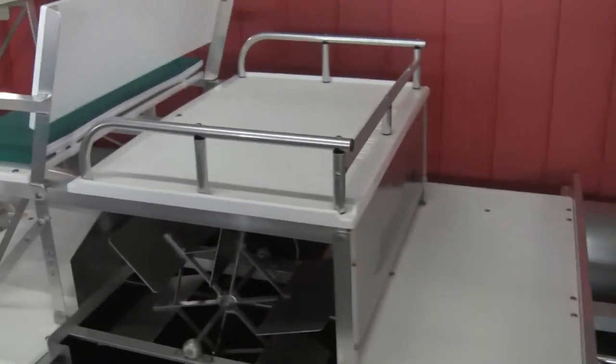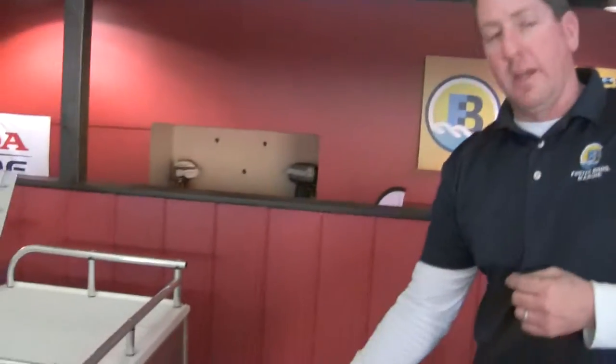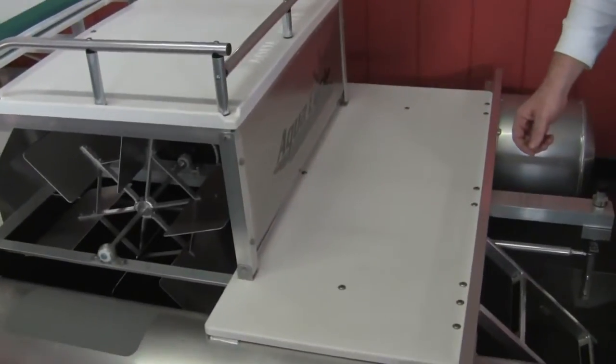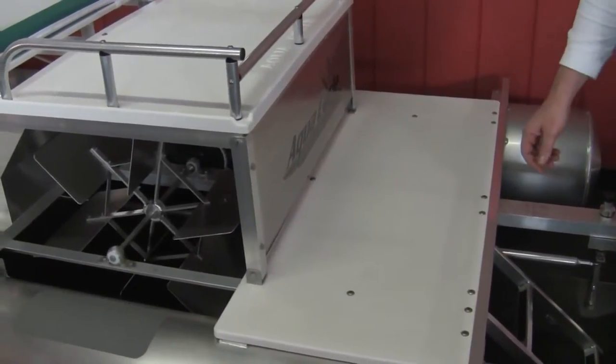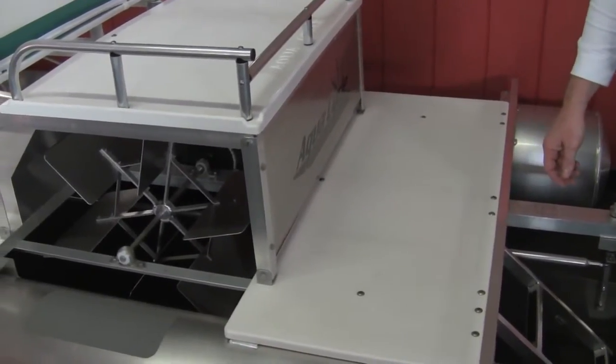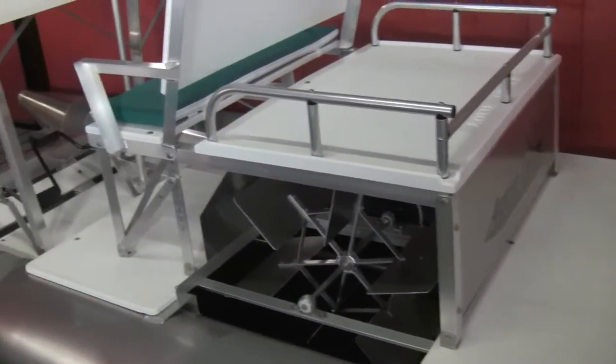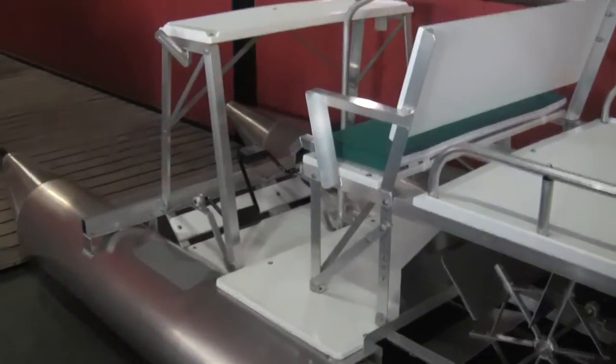These boats are as close to a maintenance free product as you're going to get. The decking is made out of polyurethane so it doesn't rot, it doesn't fade. Every nut and bolt on this boat is stainless steel and the rest of it is made out of aluminum.